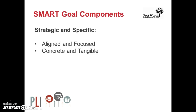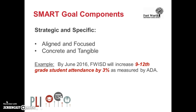Let's begin by looking at the S, which is strategic and specific. We want our goals to be aligned with the district strategic plan, focused, concrete, and tangible. Here's an example — the strategic and specific components are represented in red. By June 2016, FWISD will increase 9th through 12th grade student attendance by 3% as measured by ADA. It is definitely specific in that it is targeting specific grade levels. It is also strategic in that the data were reviewed and this issue was determined to be a priority.